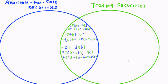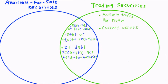As for trading securities, these are securities that are actively traded for profit. Frequent purchases and sales are made on these investments in order to make short-term profit. Related to the previous point, this means that trading securities are always current assets, because they are actively being traded.